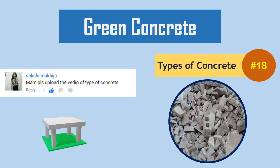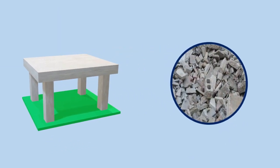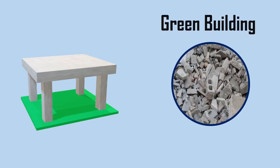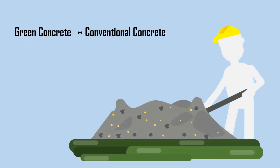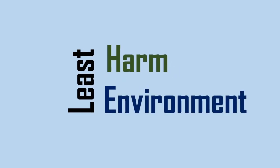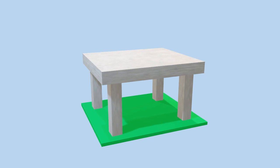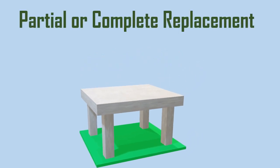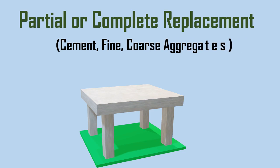Green Concrete. Concrete which is made from concrete wastes that are eco-friendly is called green concrete. The manufacturing process of green concrete is the same as conventional concrete, but production of this concrete causes the least harm to the environment. Green concrete is made with materials used as a partial or complete replacement for cement, fine, or coarse aggregates.